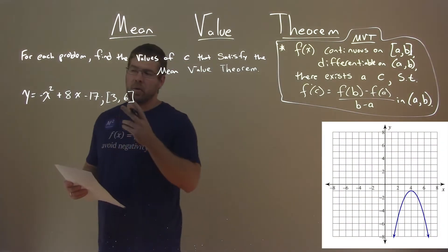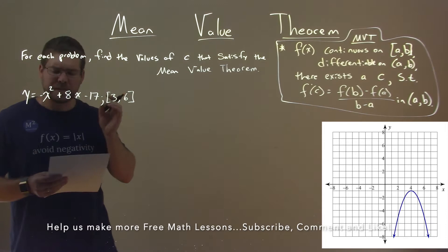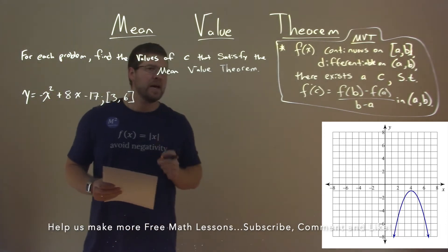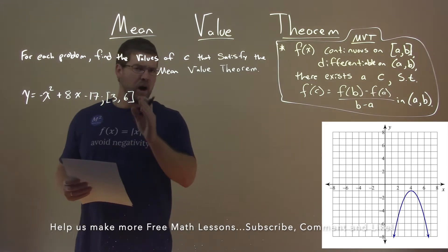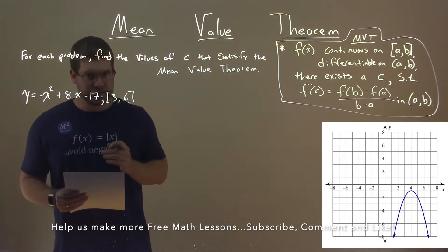I'm given this problem right here: y equals negative x squared plus 8x minus 17, and we need to find the value of c that satisfies the mean value theorem on the interval from 3 to 6.